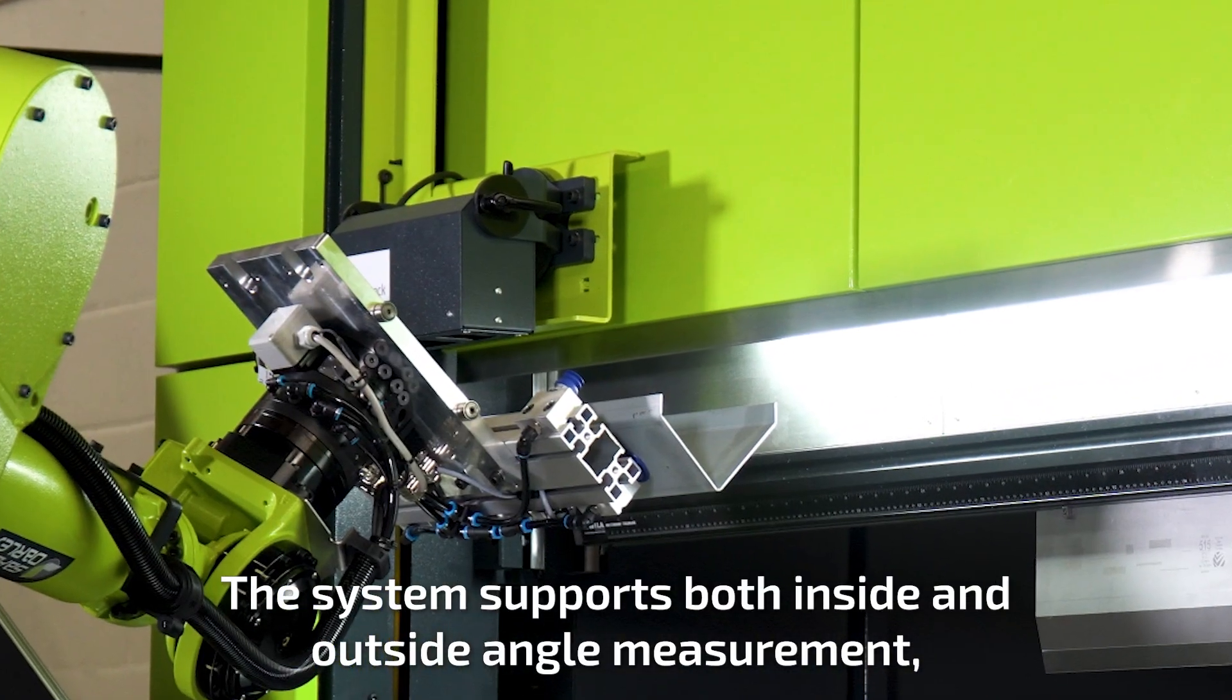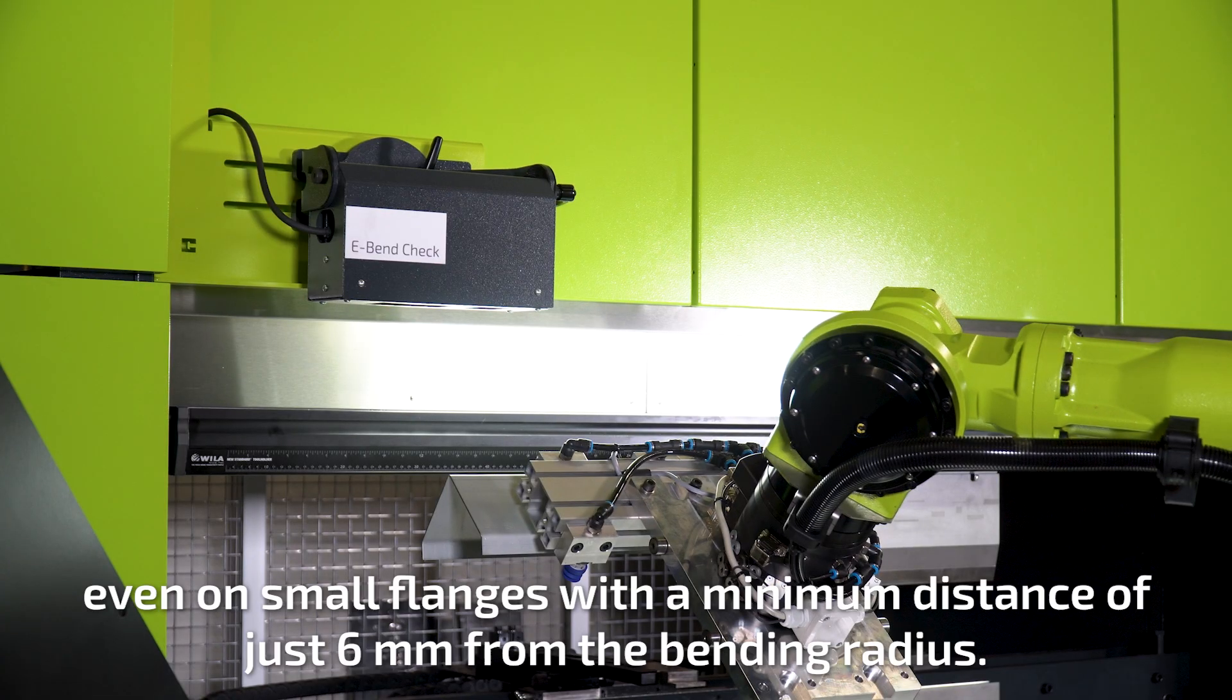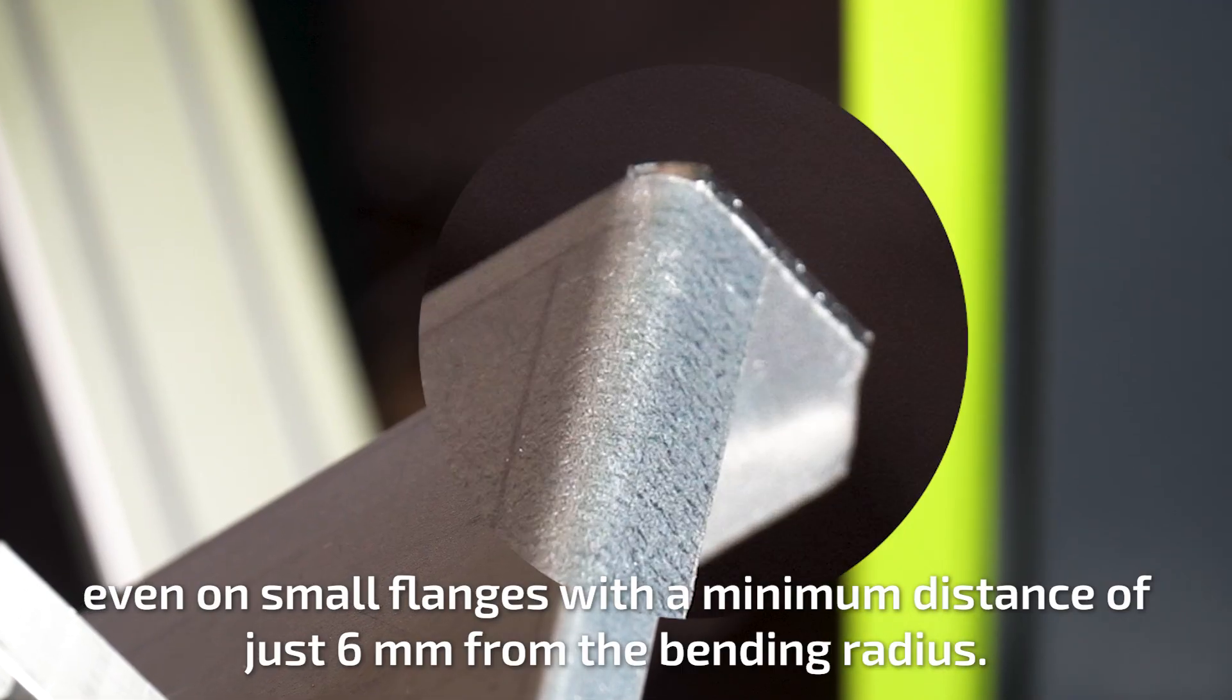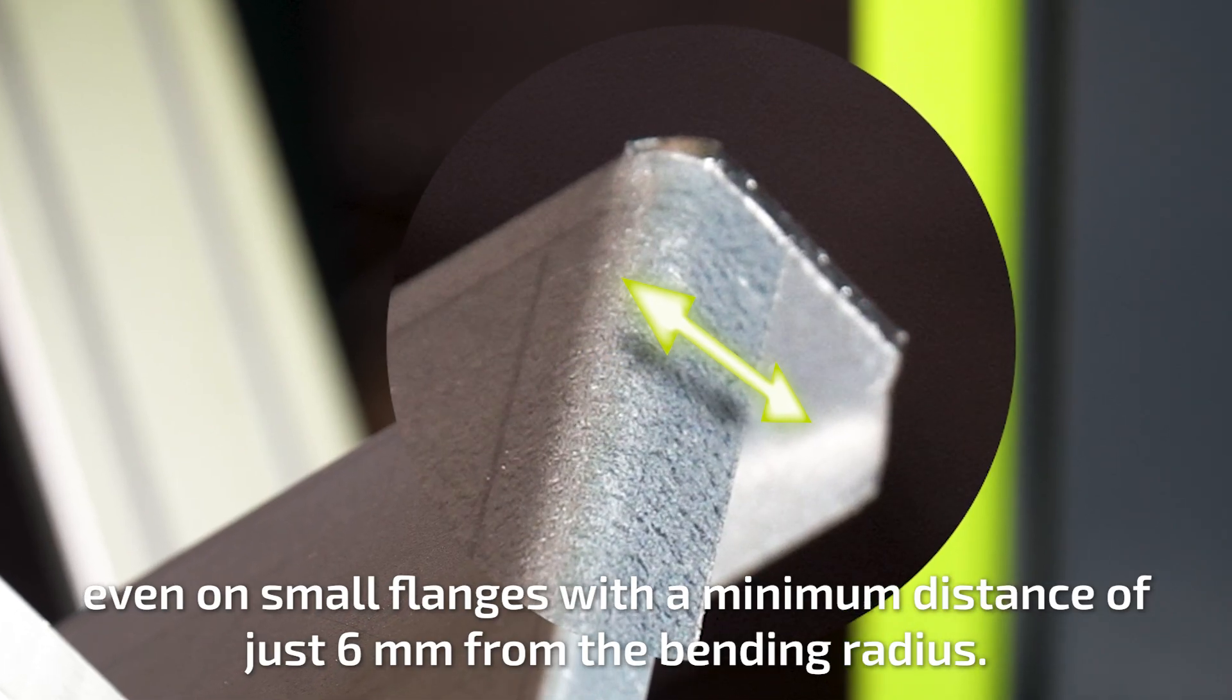The system supports both inside and outside angle measurement, even on small flanges with a minimum distance of just six millimeters from the bending radius.